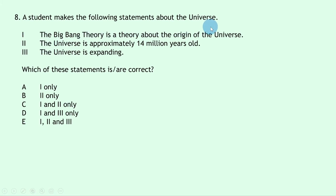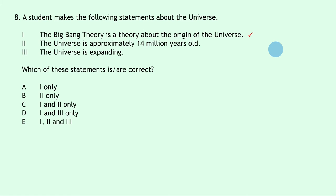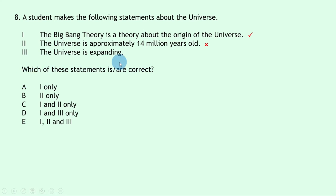Question 8 presents three statements about the universe. Statement 1 — the Big Bang Theory is a theory about the origin of the universe — is true. Statement 2 — the universe is approximately 14 million years old — is false; it's approximately 14 billion (13.8 × 10⁹) years old. Statement 3 — the universe is expanding — is true, supported by redshift and Hubble's Law. Statements 1 and 3 are correct: answer D.